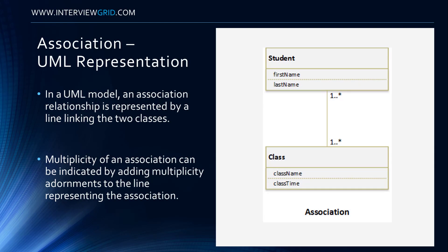In a UML model, an association relationship is represented by a line linking the two classes. Multiplicity of an association can be indicated by adding multiplicity adornments to the line representing the association.